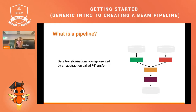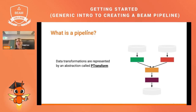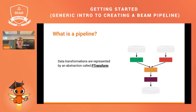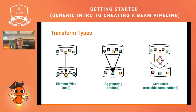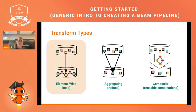When it comes to transformations within a data processing pipeline — manipulating or aggregating data — we are talking about an abstraction called PTransforms. Several types of transformations are offered within Beam. Today we will focus on three: element-wise transforms, aggregation transforms, and composite transforms.